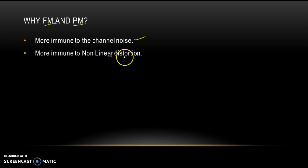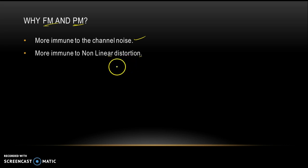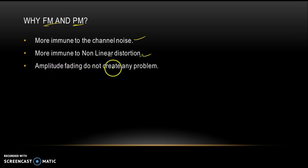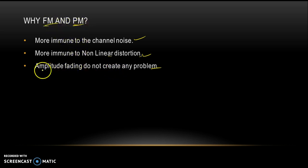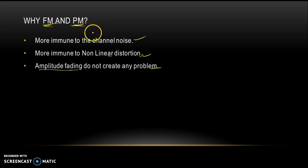Second, FM and PM are more immune to non-linear distortion — the distortion that is different for different amplitudes. In amplitude modulation, where the amplitude decreases, the distortion is non-linear; that kind of distortion rarely happens in frequency or phase modulated waves. Third, amplitude fading does not create any problem. In frequency modulation the frequency plays the role, and in phase modulation the phase shift varies, so amplitude fading will not affect the baseband signal.